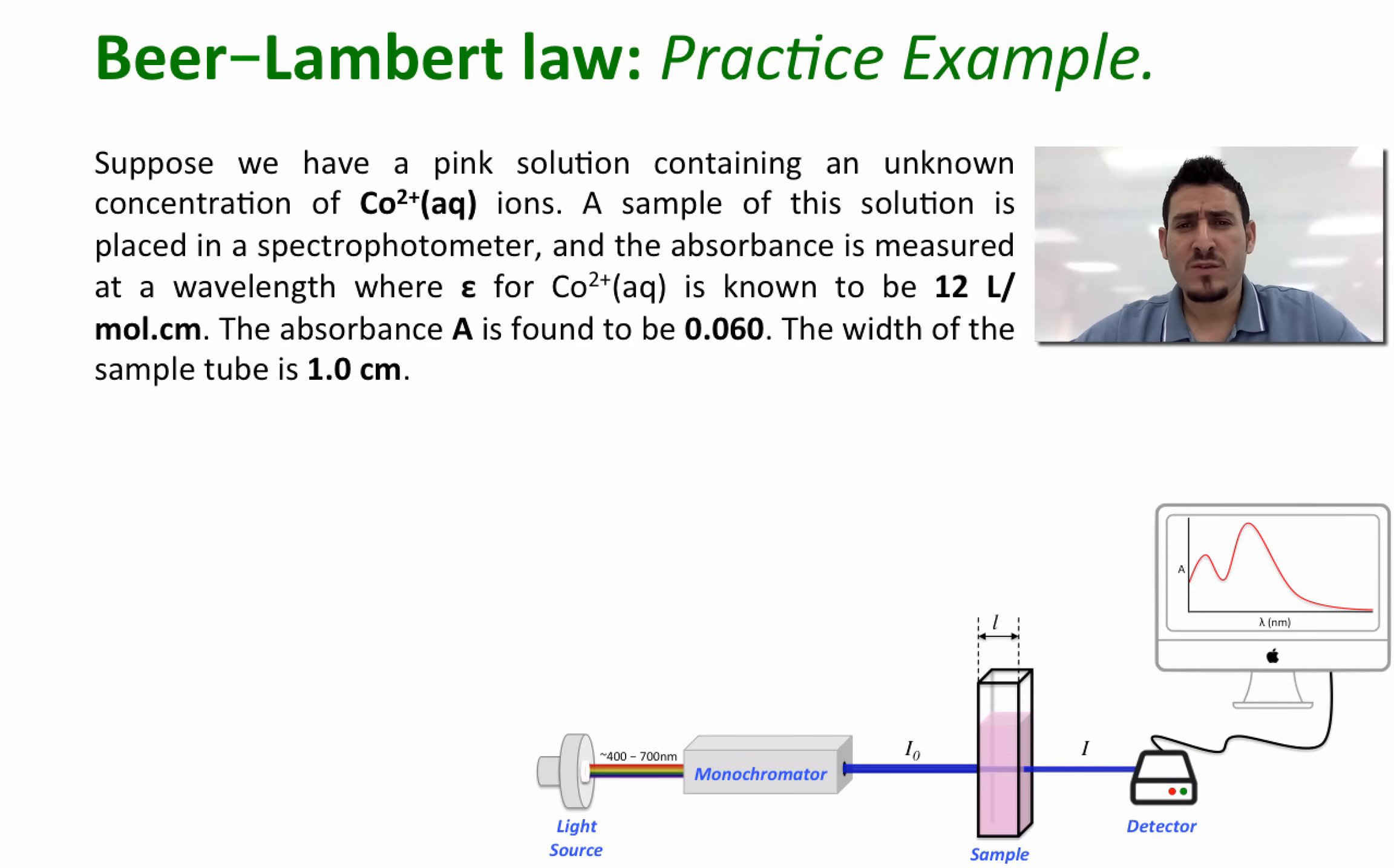Suppose we have a pink solution containing an unknown concentration of cobalt-2 aqueous solution. A sample of this solution is placed in a spectrophotometer and the absorbance is measured at a wavelength where epsilon for cobalt-2 is known to be 12 liter per mole centimeter. The absorbance A is found to be 0.060. The width of the sample tube is one centimeter. The question is: determine the concentration of the cobalt-2 ion in the solution.